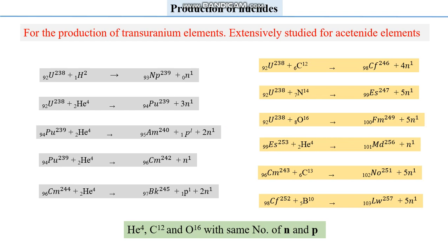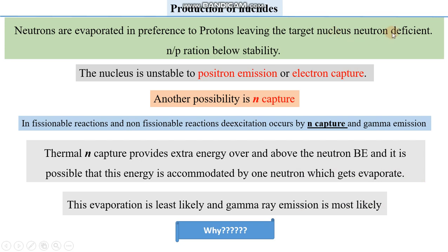Whenever neutrons are evaporated, they leave the system and render the nucleus neutron deficient. This deficiency has to be fulfilled by any process we have already discussed — either production of neutrons or disappearance of protons. The disturbed ratio produced by evaporation of neutrons falls below the stability line, meaning the nucleus is not stable and will undergo further radioactivity.